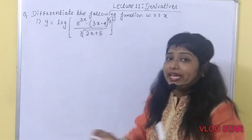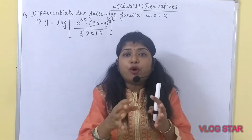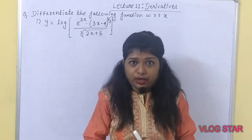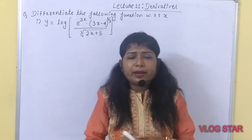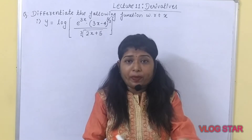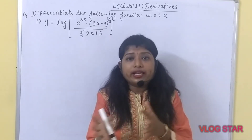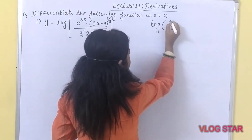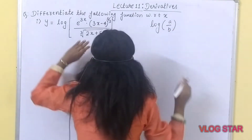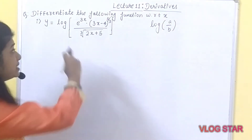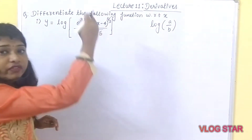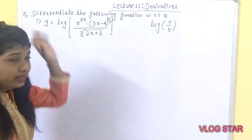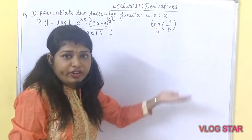By looking at this particular example, first we have to do some modification and after that we need to apply the standard result. If you remember — you might have studied this in 9th standard logarithm — the given question is in the format log of a upon b. We cannot apply the standard formula directly for that; we have to perform some modification.